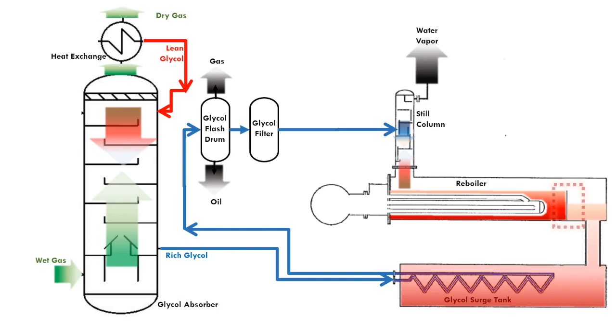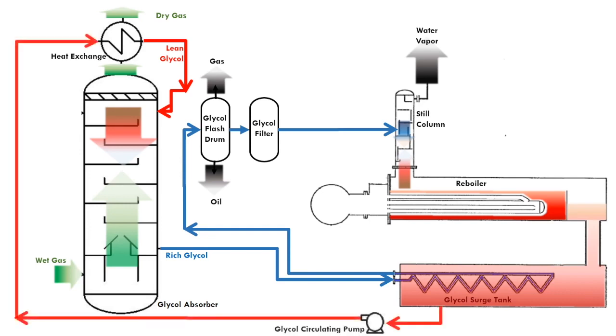The glycol in the reboiler is maintained above the fire tubes of the heater by a weir. The lean glycol overflows down into the glycol surge tank. The lean glycol is circulated back to the glycol absorber using the circulating pump.